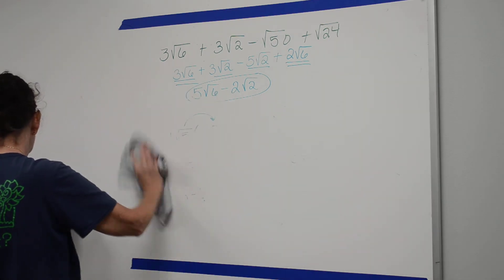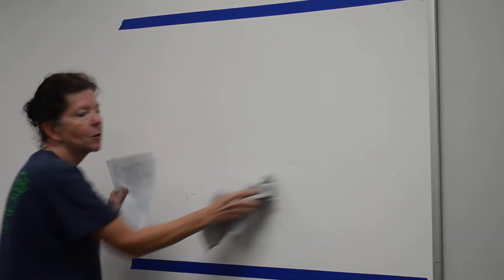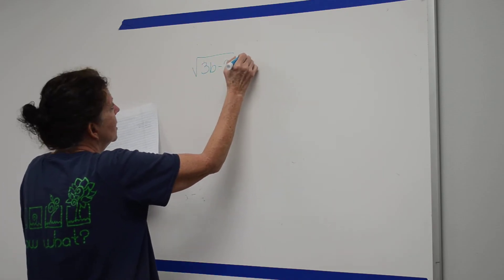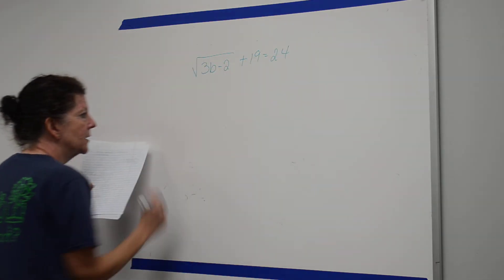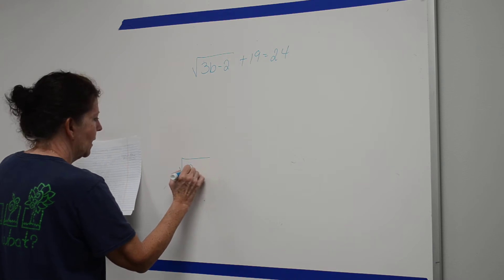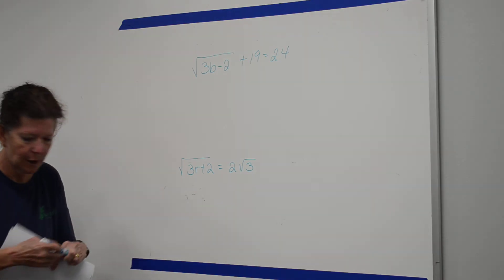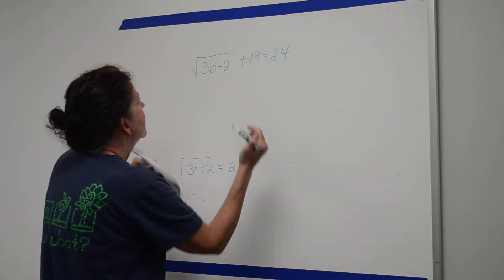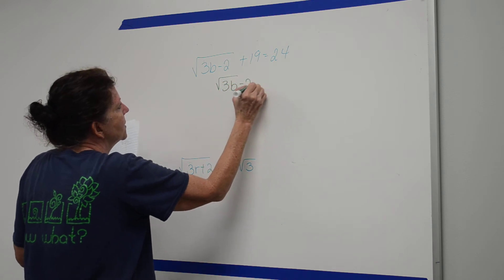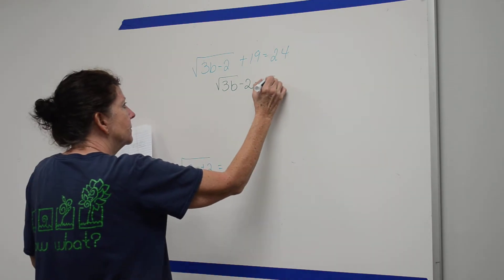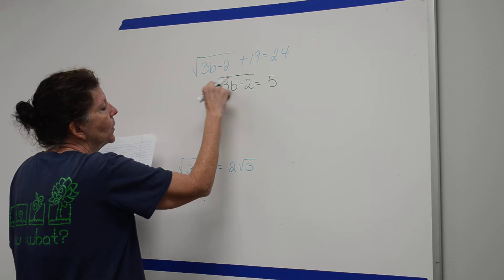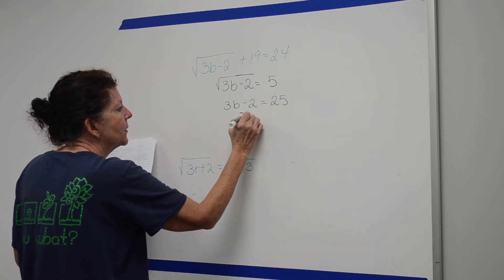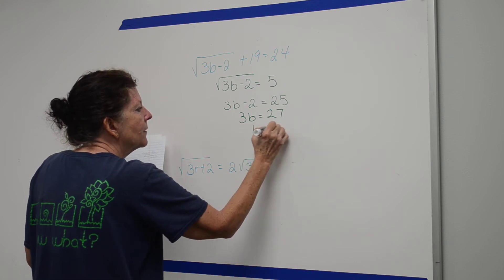Section 11.3 covered radical equations, where you solve for unknowns. For the square root of 3B minus 2 plus 19 equals 24: first subtract 19 from both sides to get the square root of 3B minus 2 equals 5. Then square both sides to get 3B minus 2 equals 25. Add 2 to get 3B equals 27, then divide to find B equals 9.